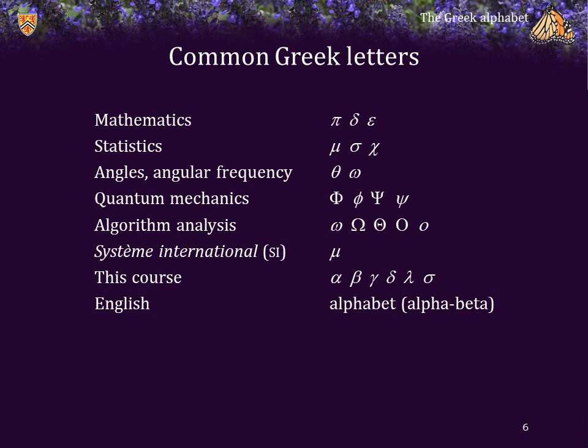In the international system of units, mu is an SI prefix. In this course, we're mostly going to restrict ourselves to alpha, beta, gamma, delta, lambda, and sigma. And of course, the word alphabet itself comes from the A's and B's of your writing — alpha, beta.